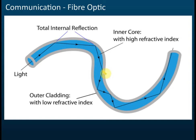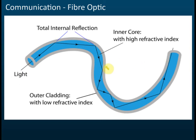This is so that total internal reflection can occur. You should have learned this in Form 4, Chapter 5 — total internal reflection can only occur for light that moves from high refractive index to low refractive index. So the inner core has a higher refractive index, the outer cladding has a lower refractive index, and the light undergoes total internal reflection inside.